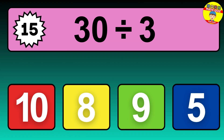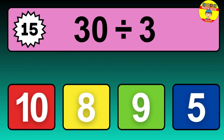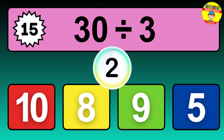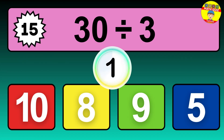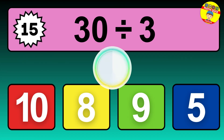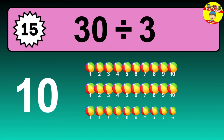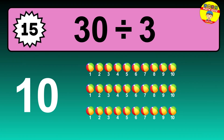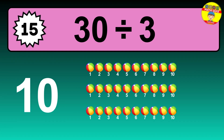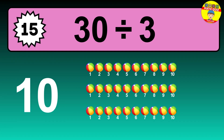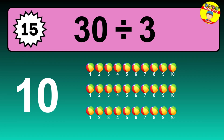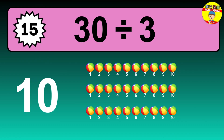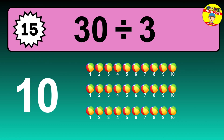What is 30 divided by 3? Picture this — you have 30 objects to divide into groups of 3. How many groups can you make? Let's think about it. Ready to find out? Let's break it down. Let's imagine you have 30 objects. Can you picture them lined up? Now, think about splitting them equally into smaller groups.